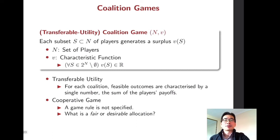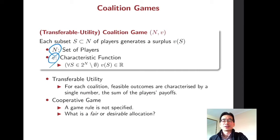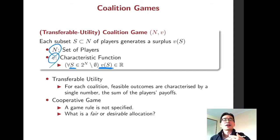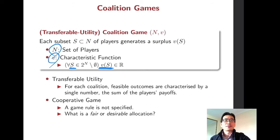A coalition game consists of two components: N, the set of players, and V, the characteristic function, which assigns a real number to each coalition or subset of the set of players. This situation allows transfer of utility. So for each coalition, feasible outcomes are characterized by a single number representing the sum of players' payoffs. This is a special class of cooperative game, as it does not specify any game rules or players' actions.